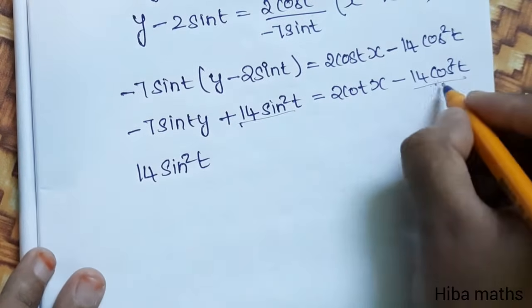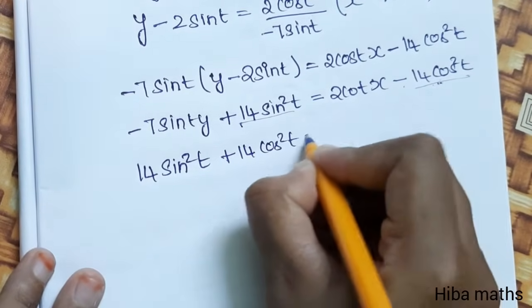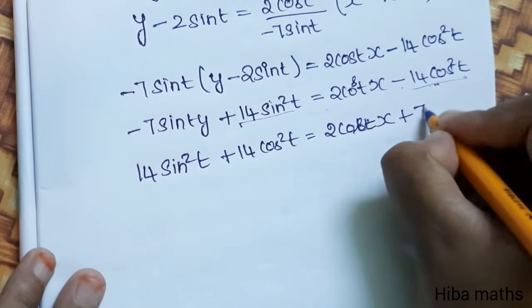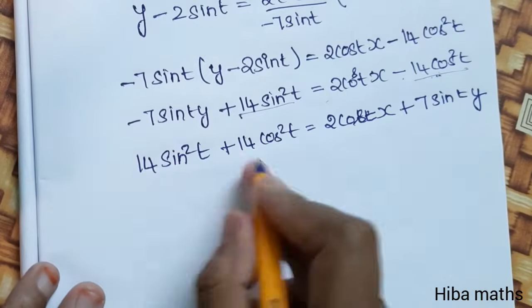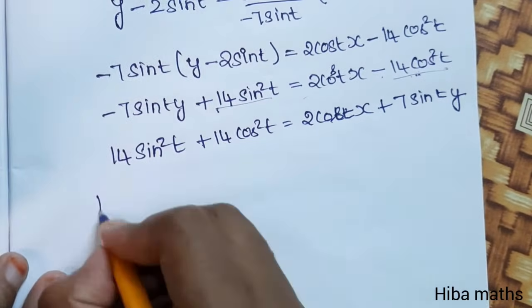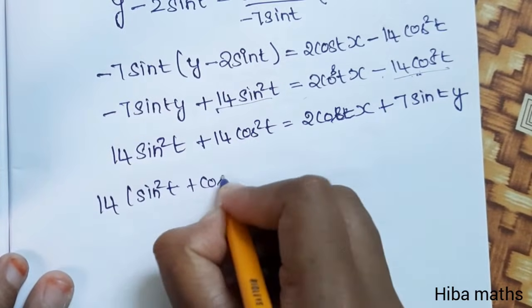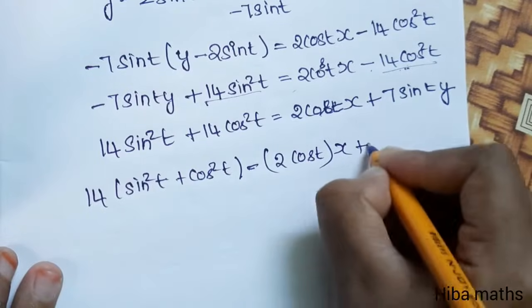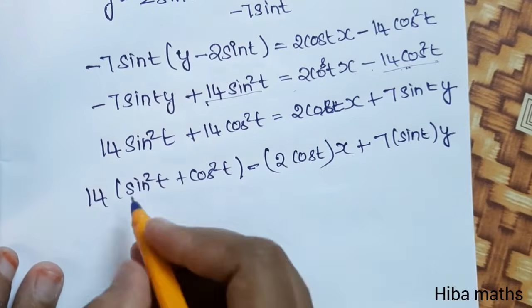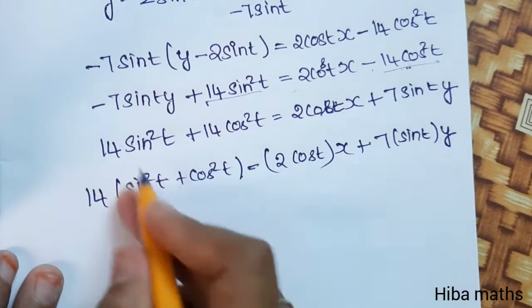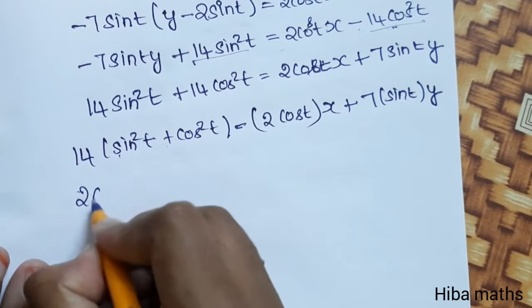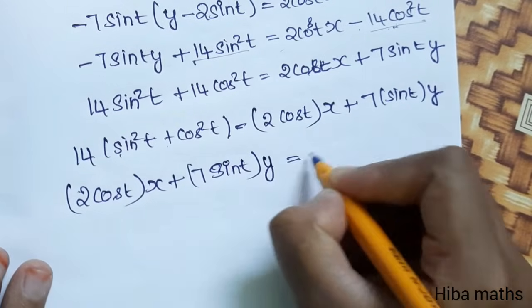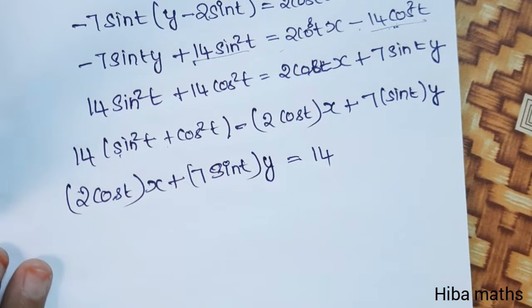14 sin square t equals minus x term; 14 cos square t combines with the other terms. Since sin square t plus cos square t equals 1, the equation simplifies to: 2 cos t into x plus 7 sin t into y equals 14. This is the equation of the tangent.